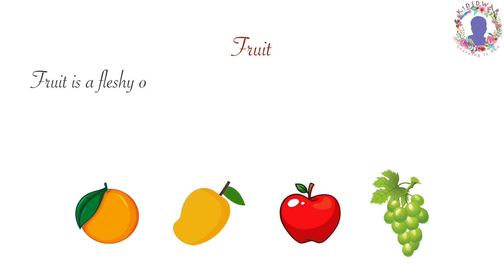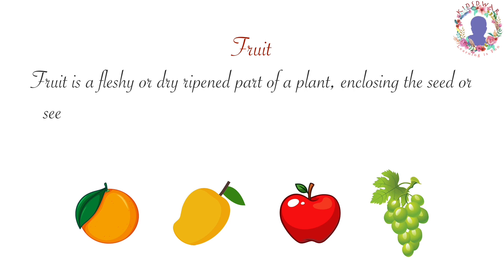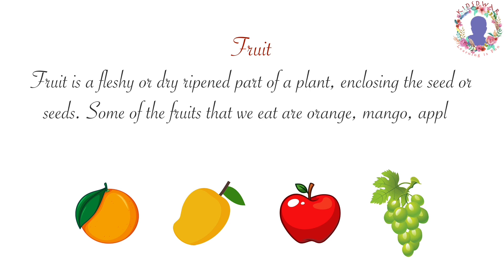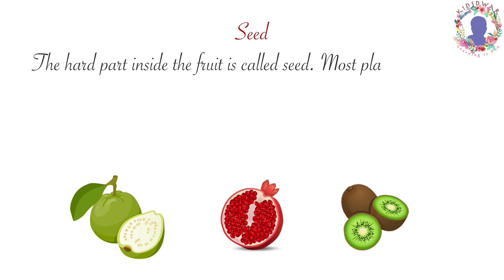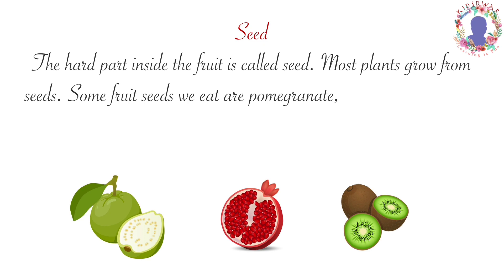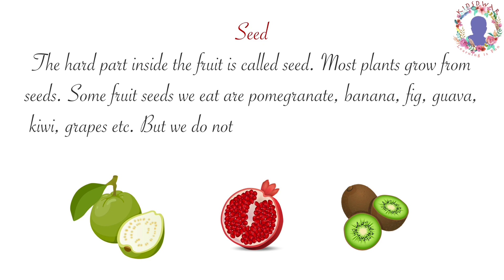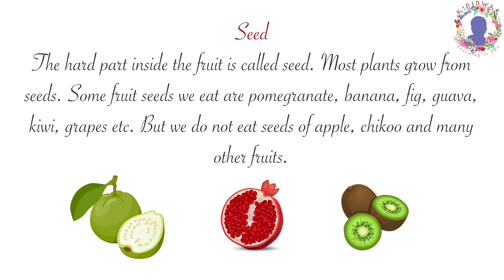Fruit is a fleshy or dry ripened part of a plant, enclosing the seed or seeds. Some of the fruits that we eat are orange, mango, apple, grapes, etc. The hard part inside the fruit is called seed. Most plants grow from seeds. Some fruit seeds we eat are pomegranate, banana, fig, guava, kiwi, grapes, etc. But we do not eat seeds of apple, chiku, and many other fruits.